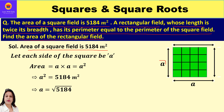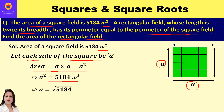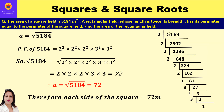Suppose this is a square field where the length and breadth are both equal to 'a'. So we can say each side of the square is 'a'. Area is a × a, which equals a². So a² is given as 5184. We need to find each side, that is 'a', so each side will be the square root of 5184.